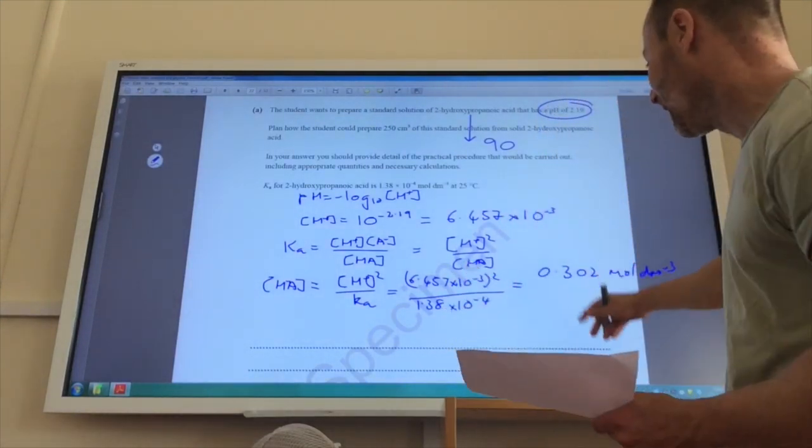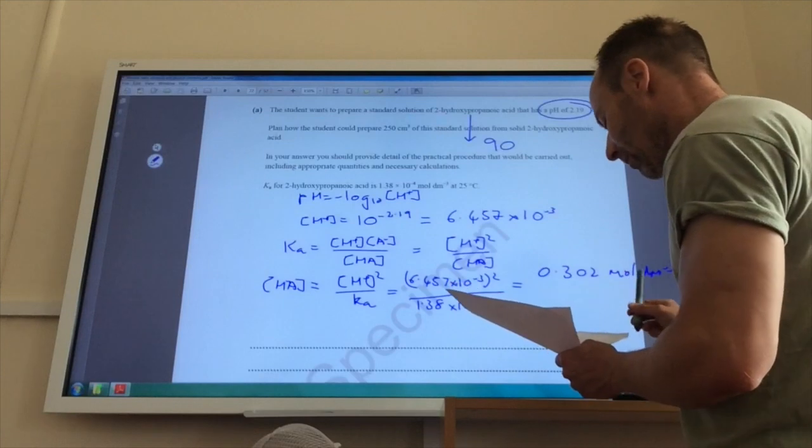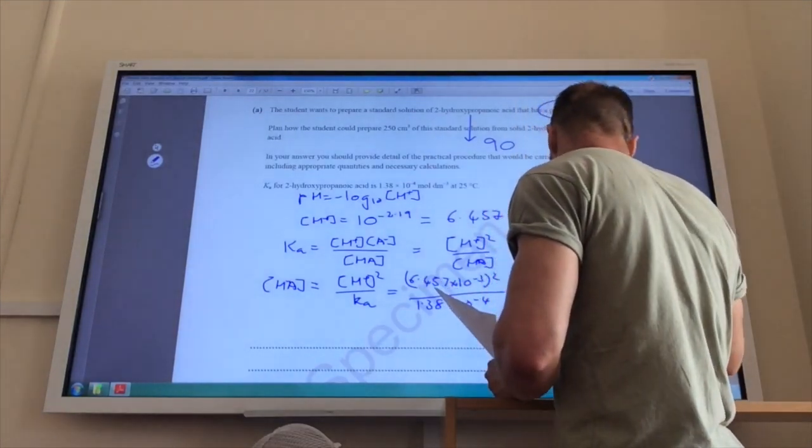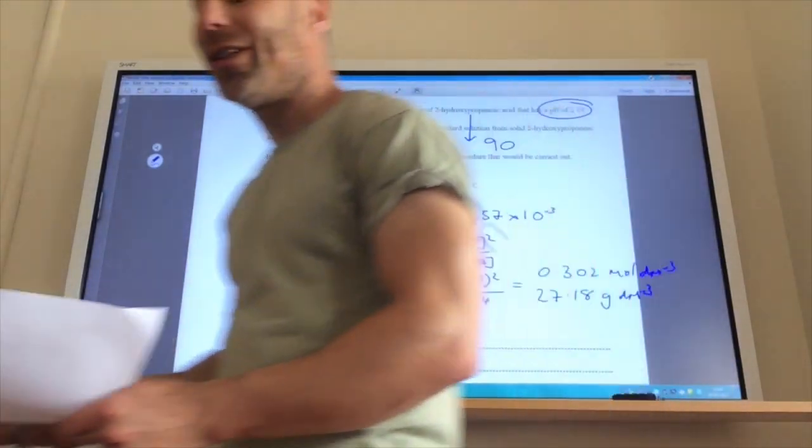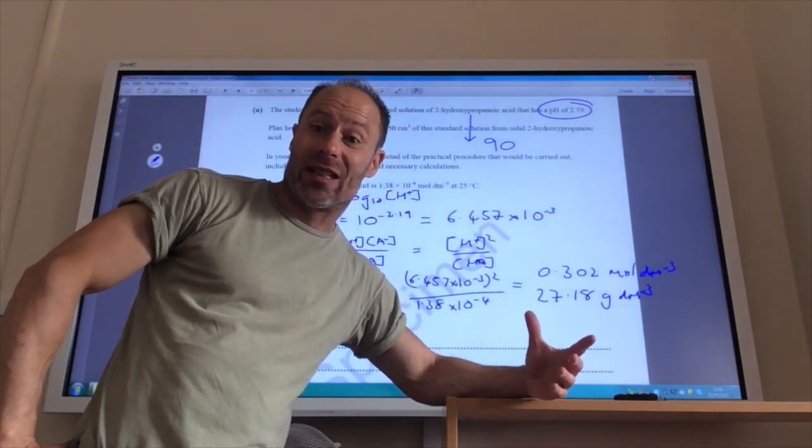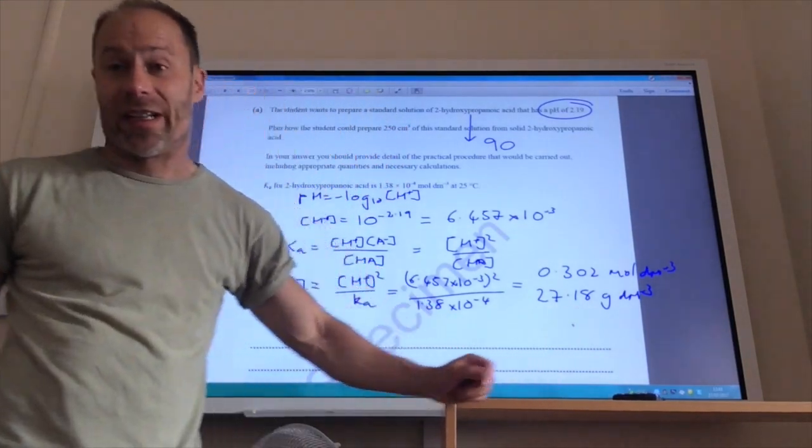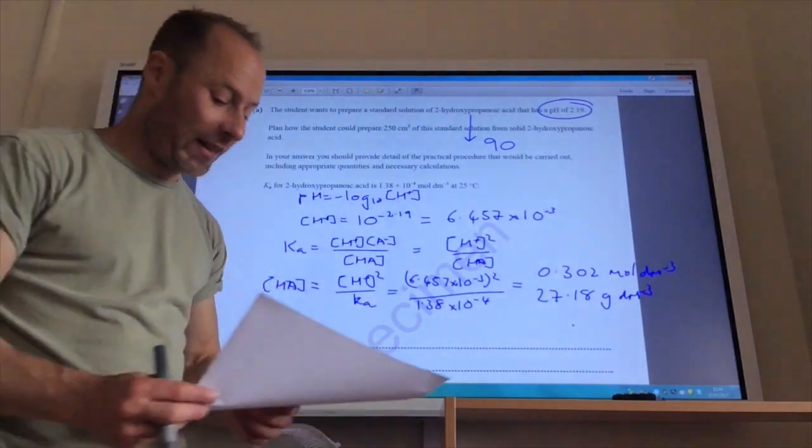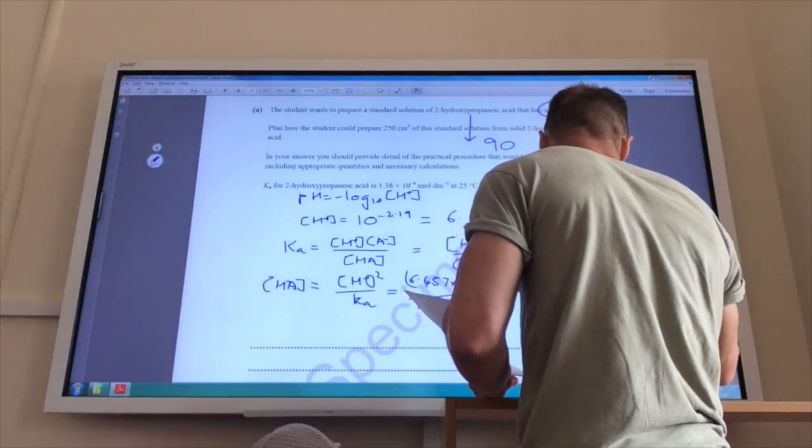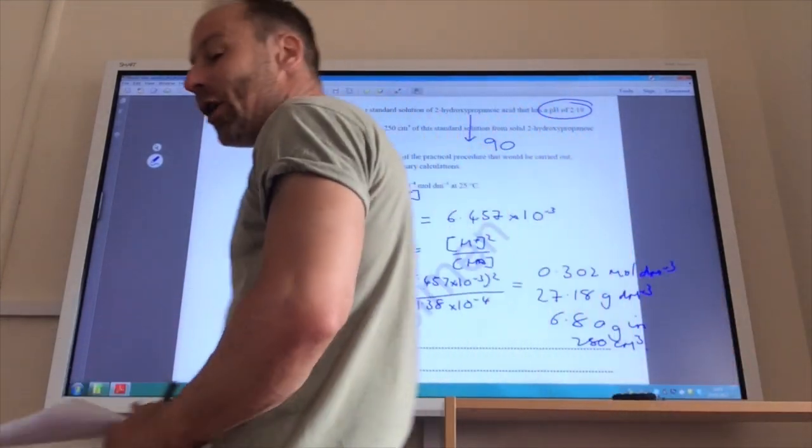I really need to know how many grams I'm going to have to dissolve for the experiment. So, I convert that by times it by the molar mass, that number by the molar mass, to give me 27.18 grams per decimetre cubed. So, I need to dissolve 27.18 grams in one decimetre cubed, which is a thousand centimetres cubed. I only want to make up 250, so I need to divide this number by four to find out how much I need to dissolve in 250, which would be 6.80 grams in 250 centimetres cubed, like so.